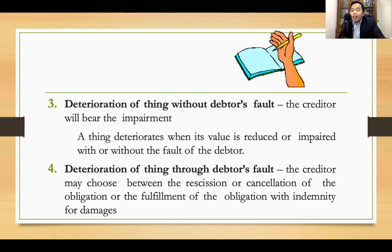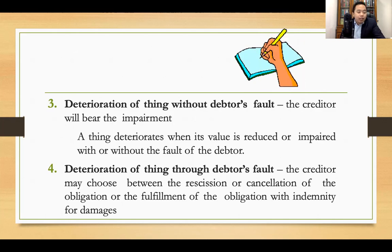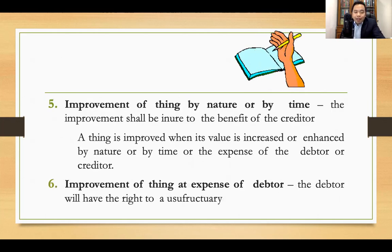If the thing deteriorates through the fault of the debtor, then the creditor has two options. The creditor may choose between rescission — meaning cancellation of the obligation — or fulfillment of the obligation with indemnity for damages in both cases. Fifth, if the thing is improved by nature or by time, the improvement shall inure to the benefit of the creditor. A thing is improved when its value is increased or enhanced by nature, by time, or at the expense of the debtor or creditor. If the thing is improved at the expense of the debtor, the debtor will have the right to usufruct.